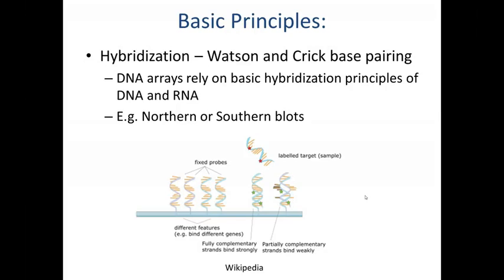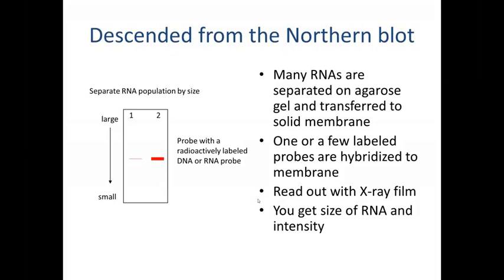The basic principles of DNA arrays involve Watson and Crick hybridization or base pairing — similar to the northern or southern blot — but instead of probes being fixed on a membrane, now they're fixed on a solid surface such as a glass slide. Fixed probes are aligned on a solid matrix, and a labeled target hybridizes to its cognate probe. You can then read that signal off and get an understanding of the intensity and expression level of that target RNA.